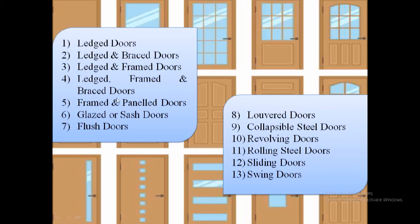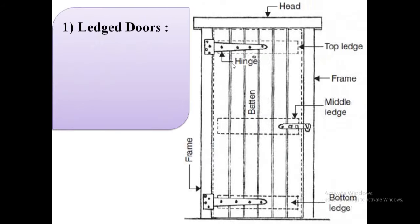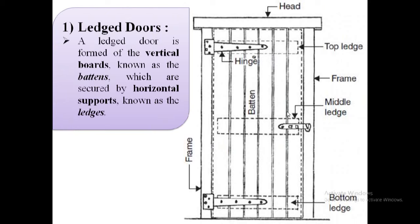The first type of door is ledge doors, as shown in this image. A ledge door is formed of vertical boards known as battens, which are secured by horizontal supports known as ledges. In this image we can see all these vertical boards are known as battens, and these battens are secured by these horizontal supports known as ledges. The ledges have three types: the top ledge, the middle ledge, and the bottom ledge.